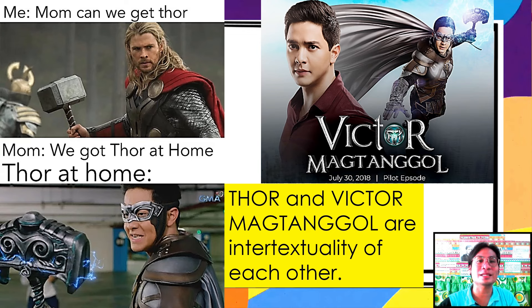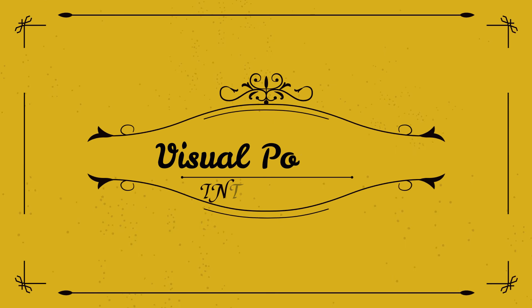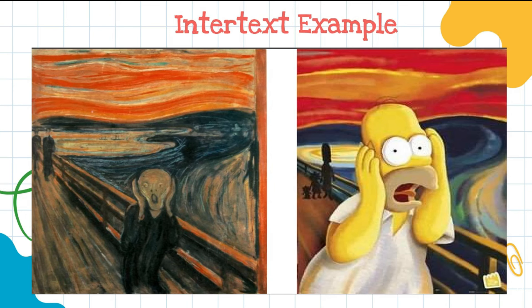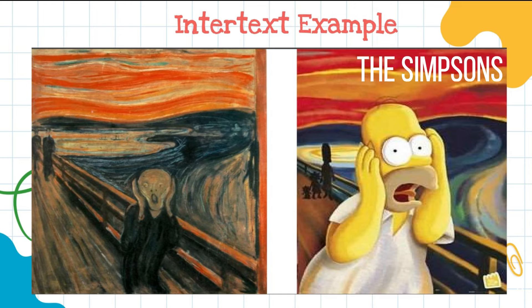Another example of intertext is Victor Magtanggol, who is compared to the Marvel superhero Thor — they are intertext of each other. As the saying goes: 'Mom, can we get Thor?' 'We have Thor at home.' Thor at home is Victor Magtanggol. Take a look at this sampled intertext — you can see similarities between an old painting and a Simpson's photo. The second picture is considered an intertext of the first because of similarities in the characters' gesture and abstract theme.